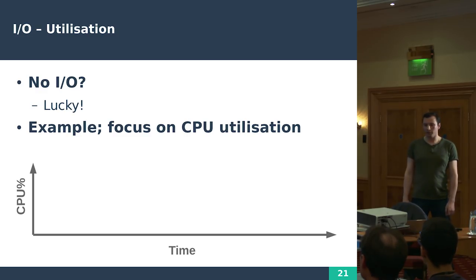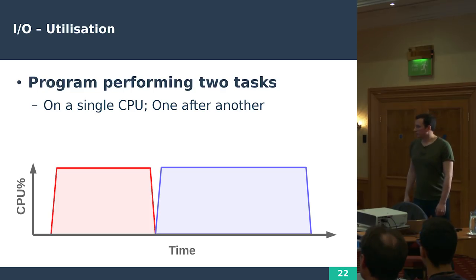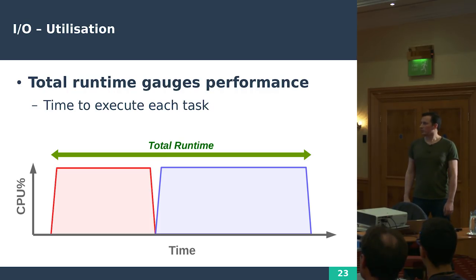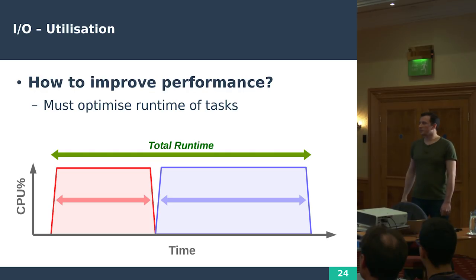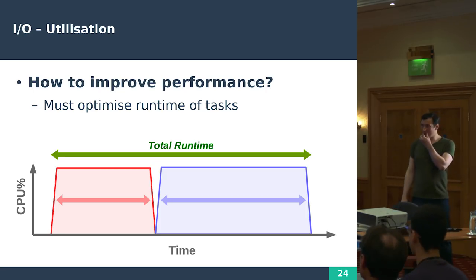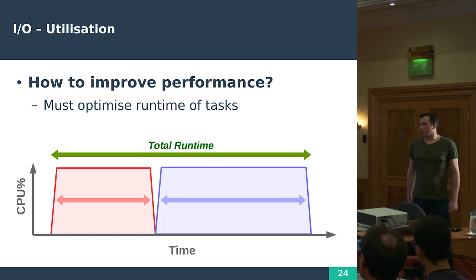Our example program is going to be quite simple — it's going to do two tasks, one after another, on a single CPU. CPU usage will spike to do the first task and spike again to do the second task, with maybe a bit of something in between. We quite often use total runtime as a gauge of performance. If you want to make this program faster, you're really limited to optimizing how those tasks execute on the CPU — better use of memory, caches, or fewer CPU instructions.